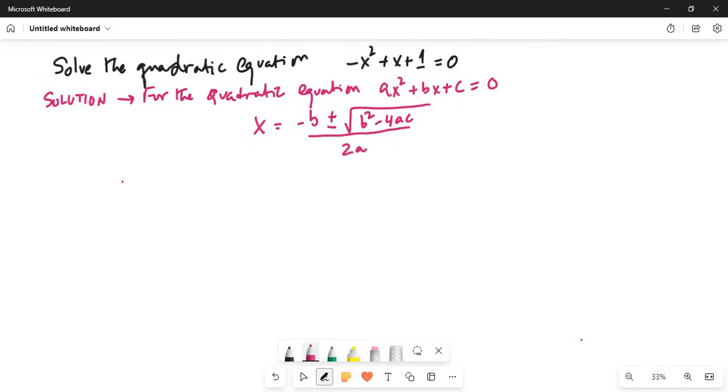So let's find out what are the coefficients a, b, and c for our equation. Our equation is minus x squared plus x plus 1 equals 0. So a, which is the coefficient of x squared, is minus 1. b is the coefficient of x, which is 1. And c, the constant term, is 1.